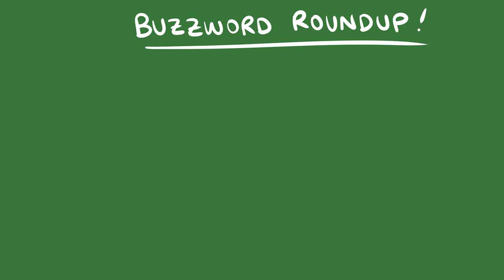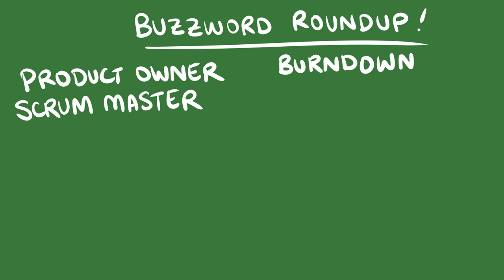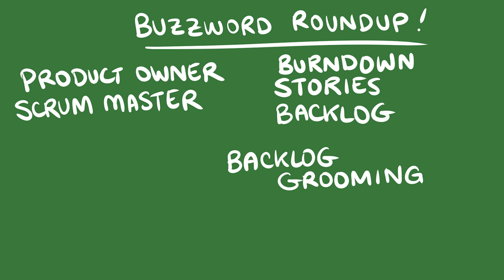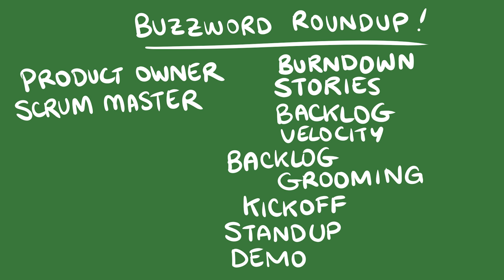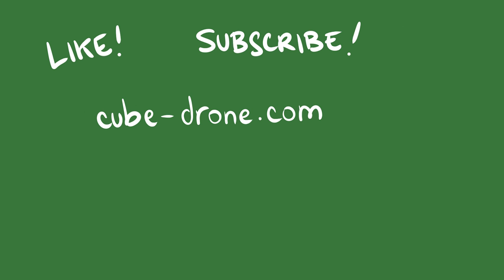Okay, so, buzzword roundup. The product owner helps prioritize and generate stories. The scrum master generates the burndown, reminds everybody of the rules, and often sends sassy emails. A backlog grooming is a meeting for generating, prioritizing, and cleaning up stories, which form the backlog. A kickoff is the meeting at the start of an iteration to estimate stories, and then you use your velocity to commit to a set of stories in the backlog. You know what a standup is already. A demo is where you show your features to the team and the product owner, and a retro is where you talk about what worked and what didn't. You update your velocity, and you celebrate with donuts. So thanks to my awesome summarizing skills, you too should be prepared to defeat bureaucracy in your company with seven mandatory meetings per week. Thanks for watching! Remember to like, subscribe, and check out my comic at cube-drone.com.